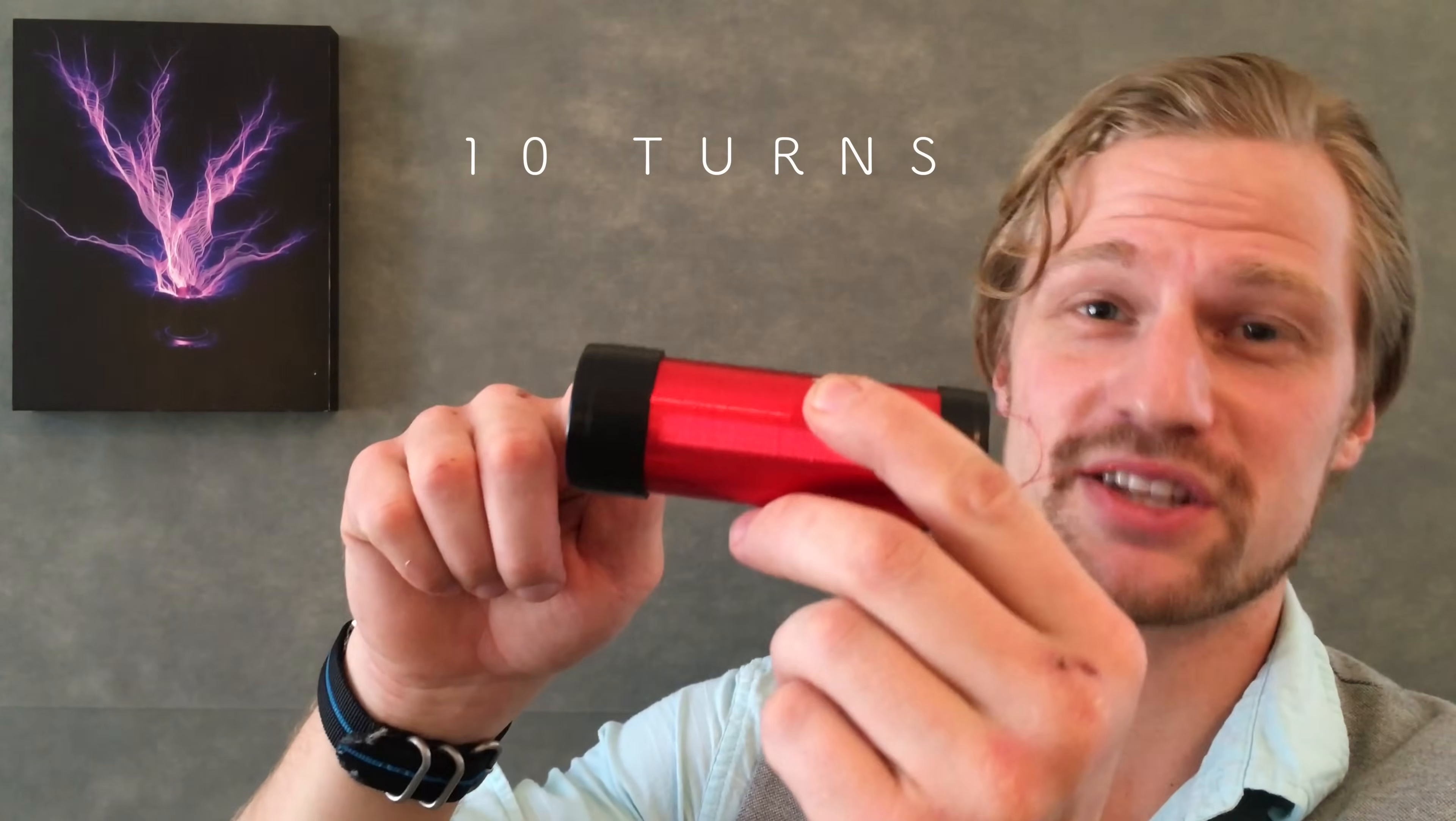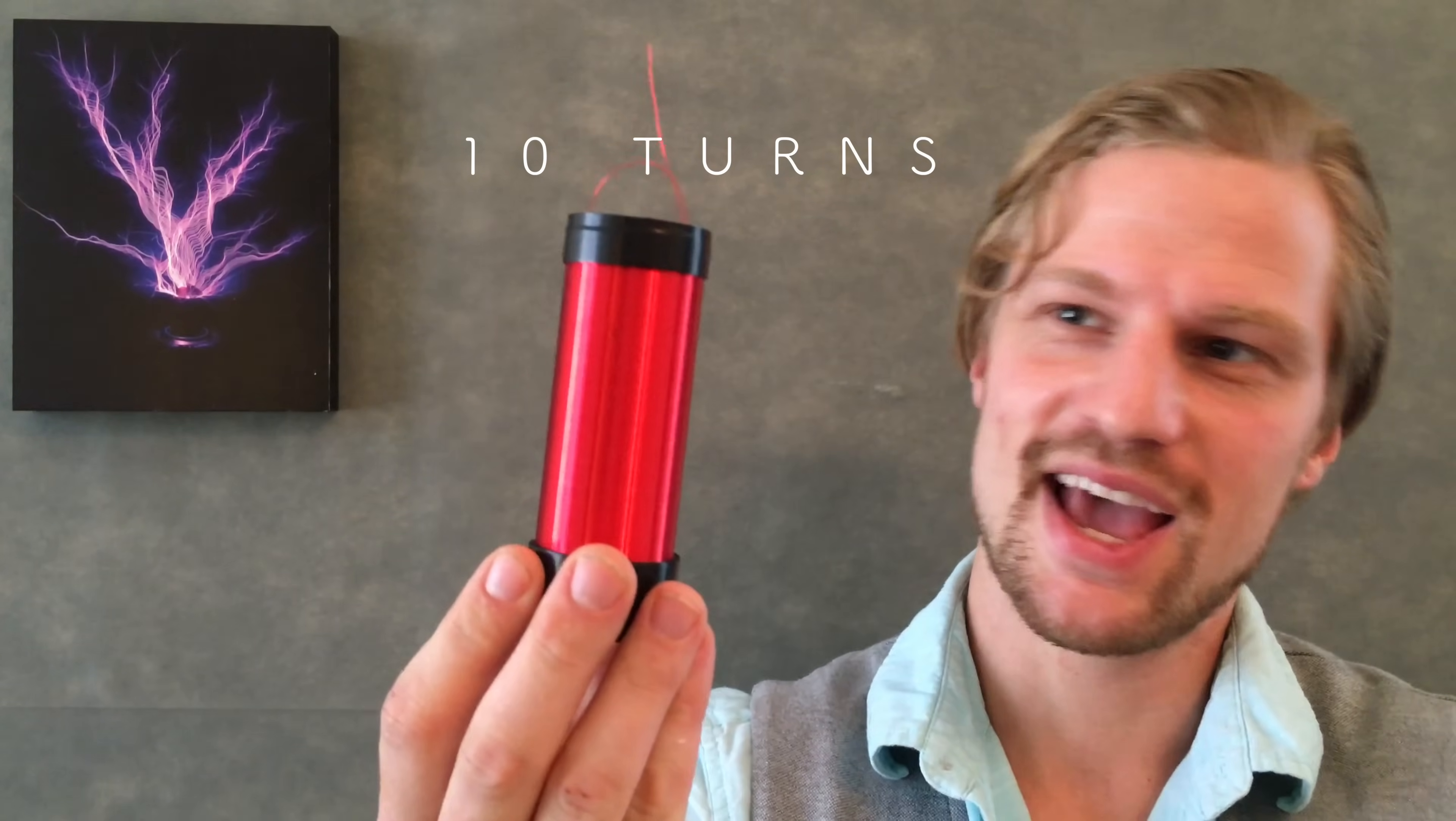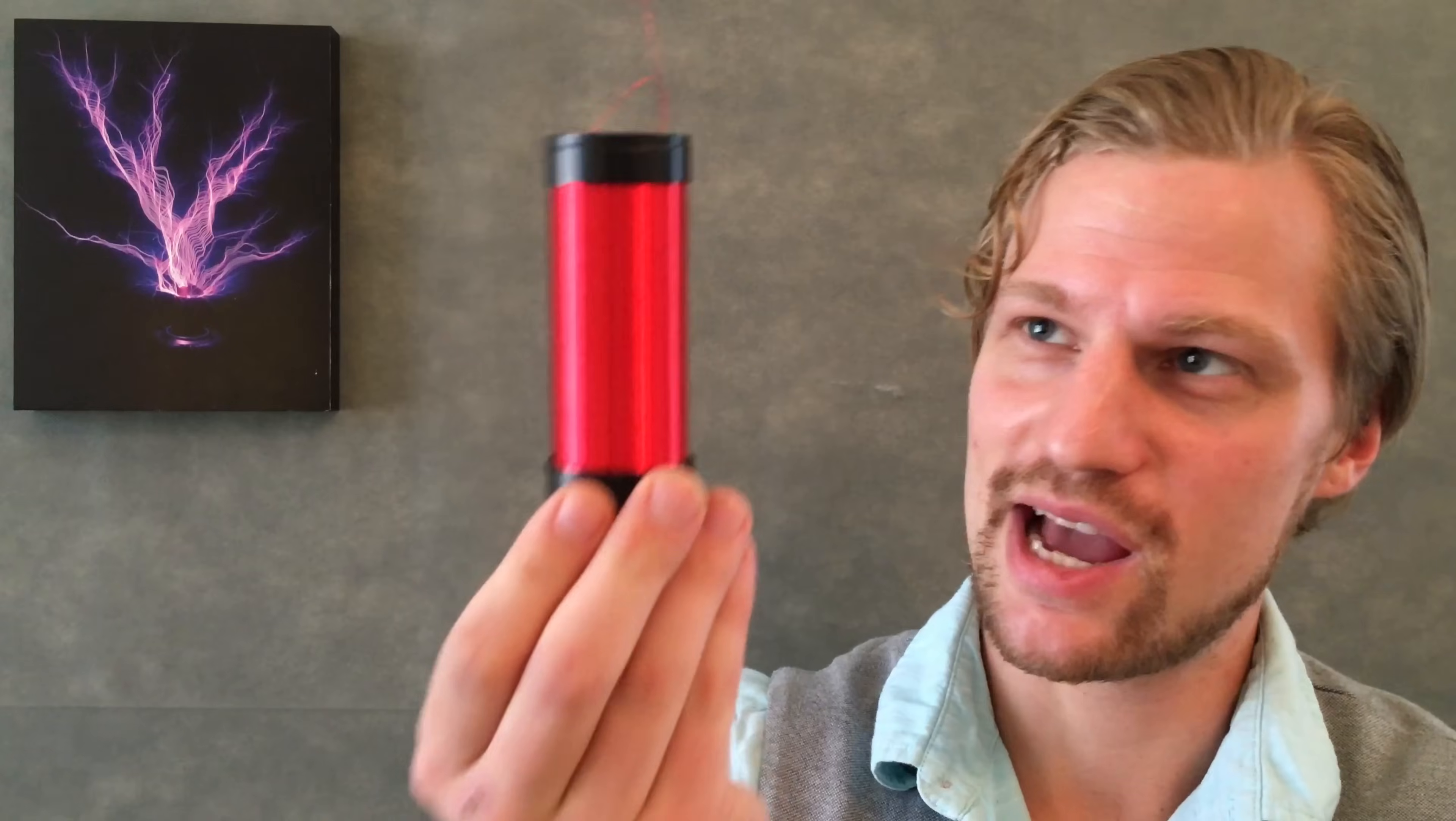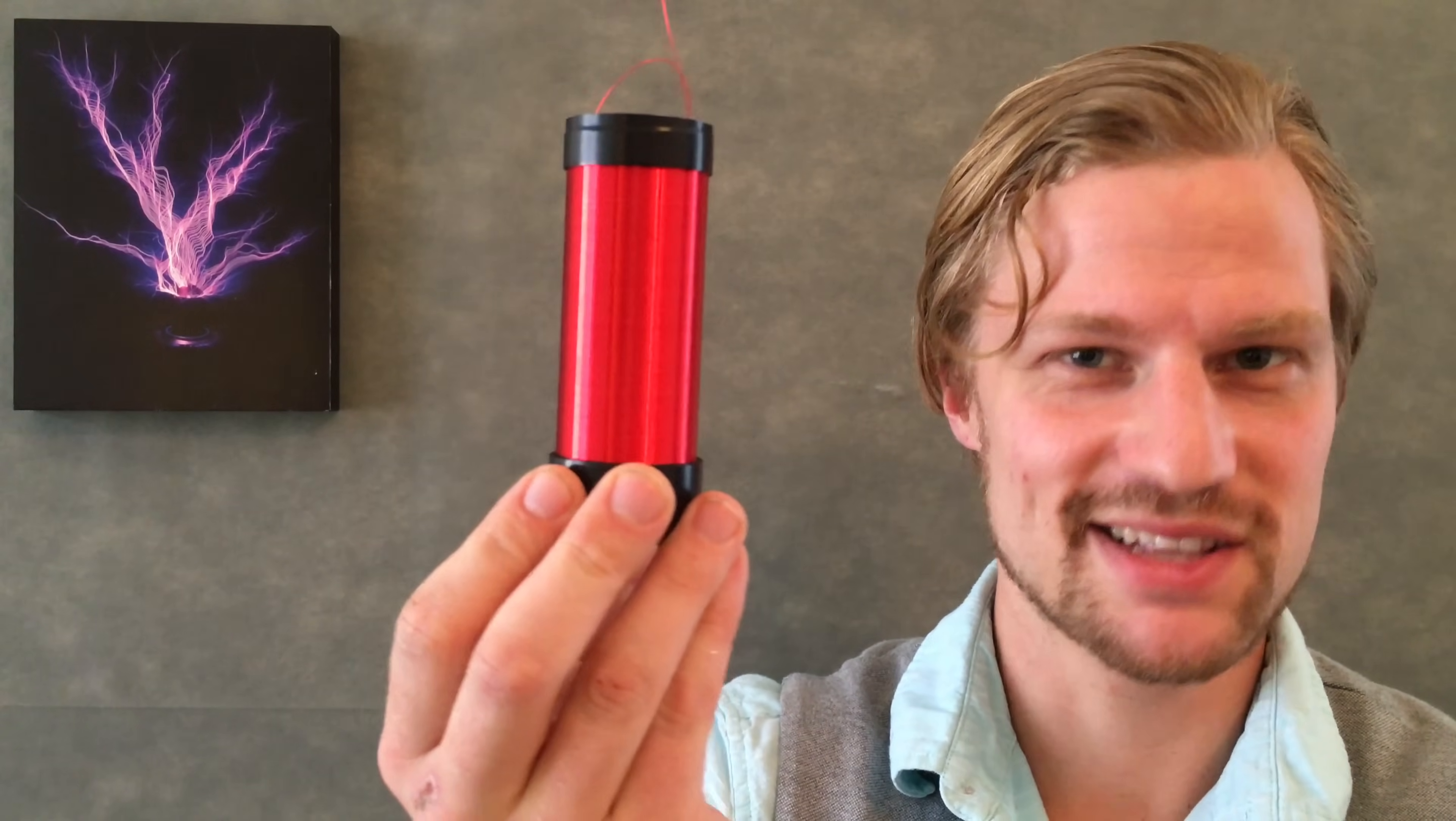Alright, so once you've wound your coil go ahead and put ten turns of electrical tape on the base and ten turns on the top. The base is particularly important because that acts as insulation between where the primary windings will be and the secondary. But you now have your iconic Tesla secondary.